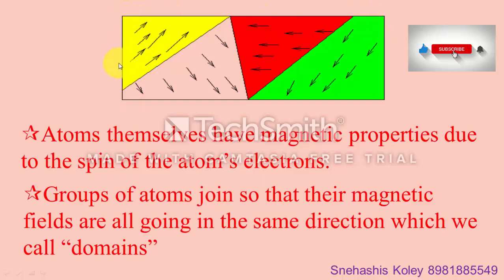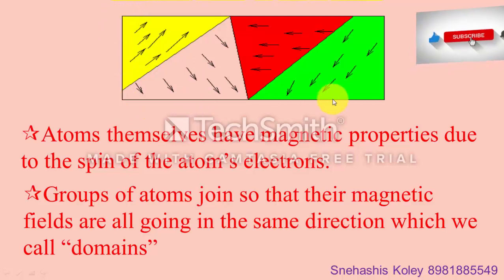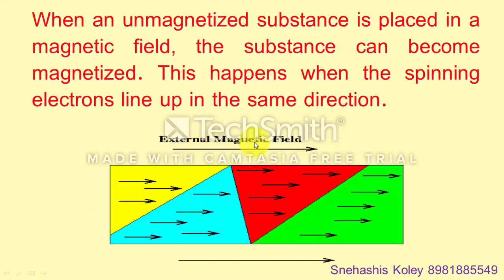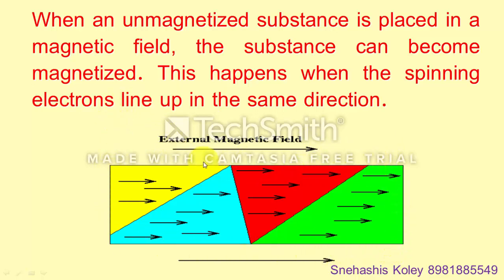Therefore, a substance generally does not show any magnetic property, like an iron nail which does not show magnetic property in general. But when the iron nail is placed near or in contact with a magnet, it shows magnetic properties. The iron nail does not show magnetic property because the sum of the magnetic fields of all domains becomes zero. However, when there is an external magnetic field, all the domains align themselves in the same direction as the external magnetic field, and it shows magnetic property.